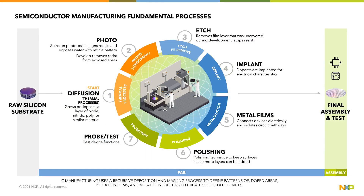Diving one level deeper into the fab processing, this manufacturing requires a clean room environment, with operators completely smocked up in protective gear to avoid contaminating the wafers or equipment. From the raw silicon substrate, a wafer will flow from machine to machine as defined by the recipe for that specific semiconductor. Think of these steps as building up layers on top of each other to define specific patterns through design that achieve a working solid-state device.